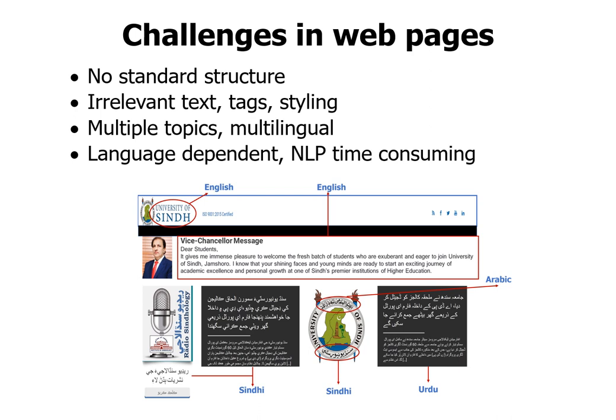What makes web pages so special or challenging? First, there is no standard structure besides the HTML code itself. The author can use all of their creativity to make whatever kind of pages they like — different styles, different layouts. A page may contain multiple different topics, and even different languages. In this example you can see there are actually four different languages on the same front page: English, Sindhi, Urdu, and Aramaic.